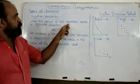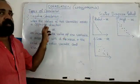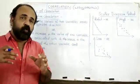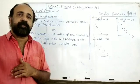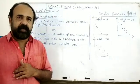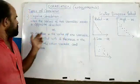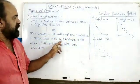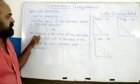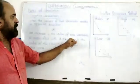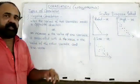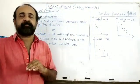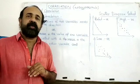Negative correlation is when the values of two variables move in opposite directions. An increase in the value of one variable is associated with a decrease in the value of the other variable.